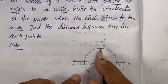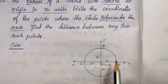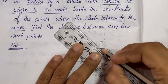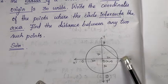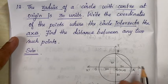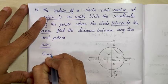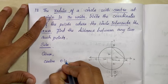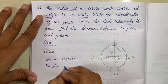Given: center is the origin (0,0) and radius is 30 units. The circle intersects the axes at four points. We need to find the coordinates of these four intersection points.